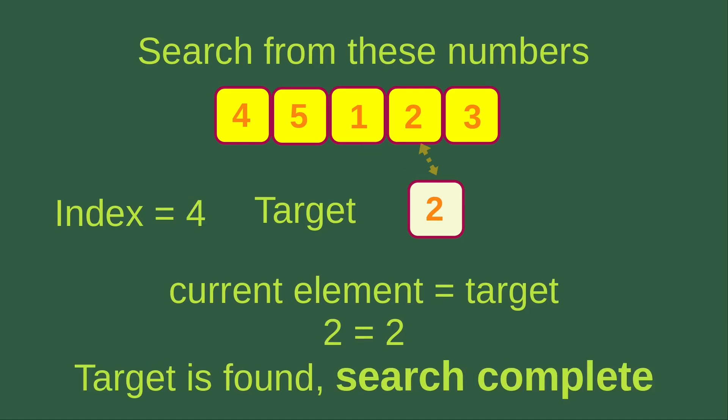Now the index is four. The current element is going to be checked with the target, and we see that the current element is equal to the target — two equals two. In this case, we can say that the target is really found from the list, and the search is now complete.